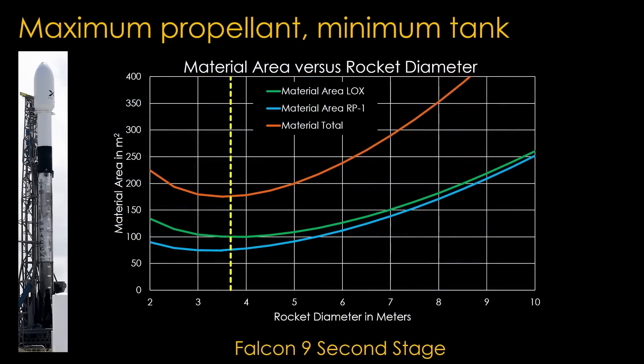This is the same chart for the second stage tanks. Note that the minimum area is pretty much exactly at the 3.7 meter diameter. So the SpaceX Falcon 9 has a second stage designed to be as light as possible, and therefore as performant as possible, and the first stage is then sized to be capable of doing what it needs to do to put the second stage in the right location. Efficiency is much more important for the second stage.